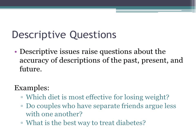Descriptive issues raise questions about the accuracy of descriptions in the past, present, and future. For example: which diet is the most effective for losing weight? You talk to a friend who lost a ton of weight and ask which one was most effective. Another example: do couples who have separate friends argue less with one another? We're describing the situation and looking for an answer. And of course, what is the best way to treat diabetes?